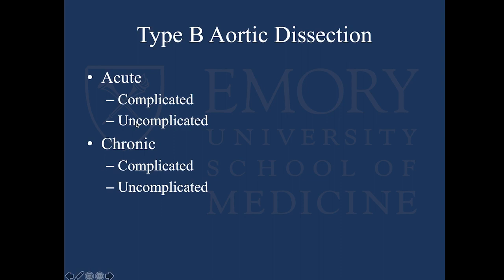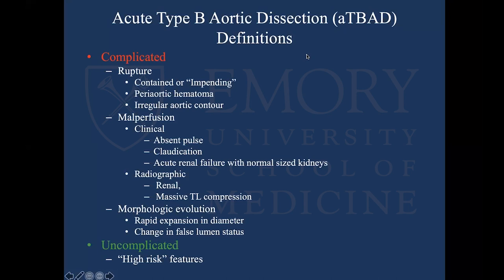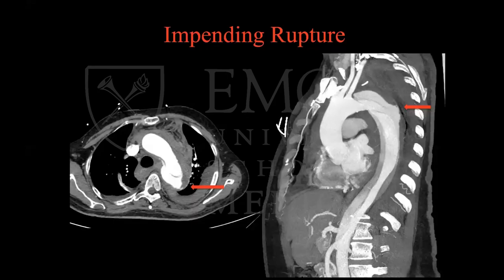An acute type B is defined as complicated by two hard signs: rupture and malperfusion. When we say rupture, it's not typically a free rupture — those patients probably die before reaching medical attention. We're really talking about a contained or impending rupture defined by periaortic hematoma or an irregular contour. Here are two examples on CT scan showing hematoma around the arch with a slight blush of contrast. On the sagittal view, it's really obvious — that's a rupture, and that patient needs to go to the OR ASAP.